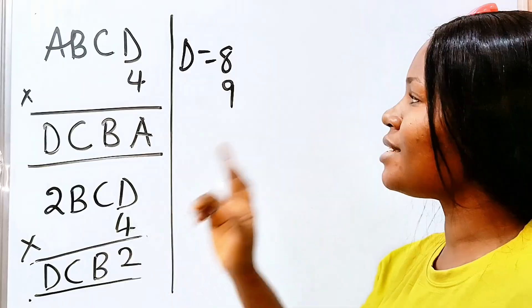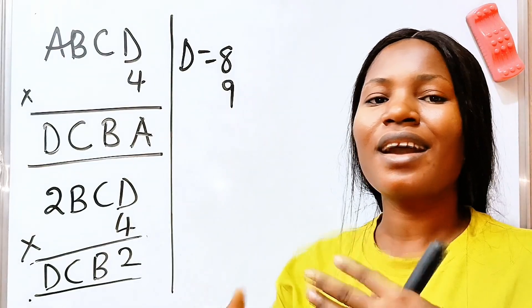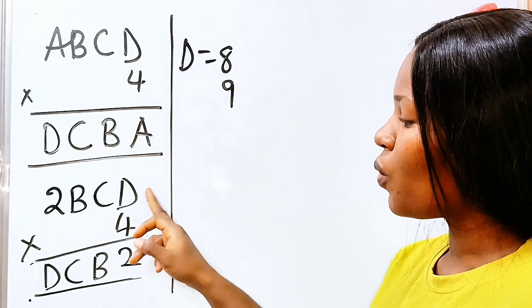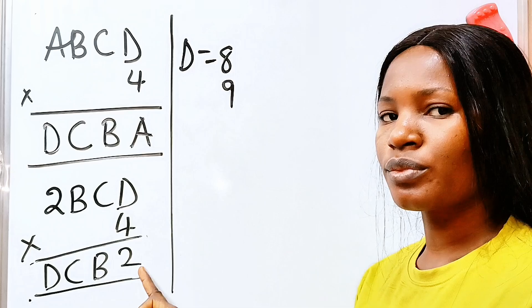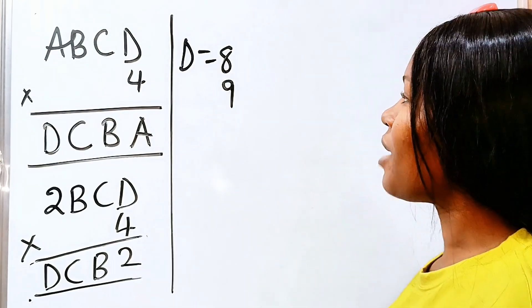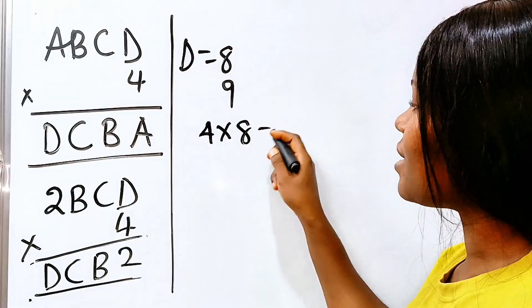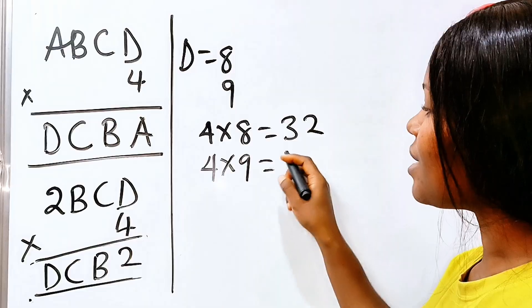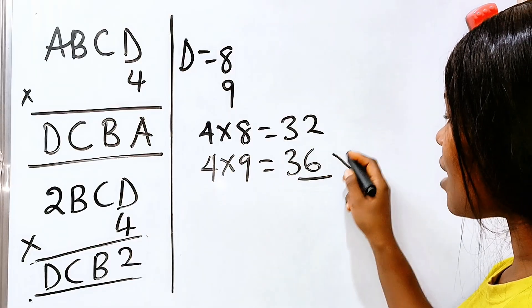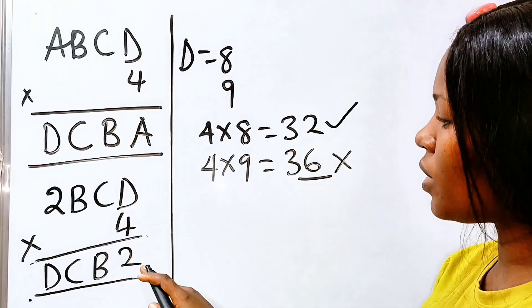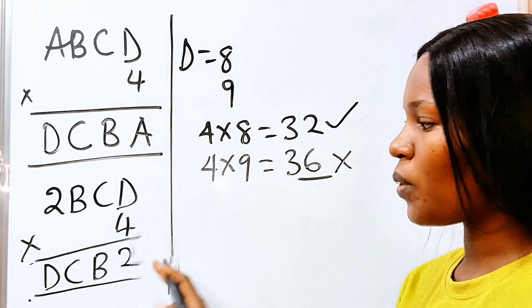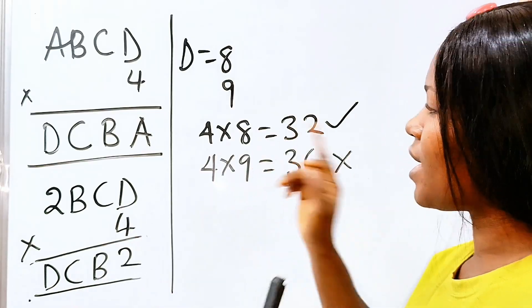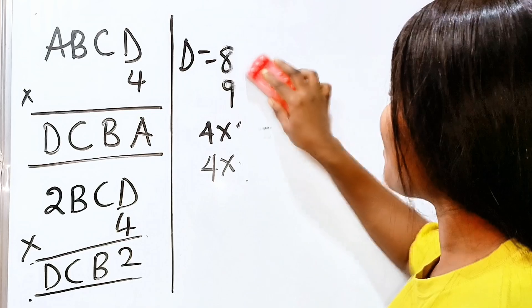So that means that our D is either 8 or 9. Now, how do we verify our answer? Remember that 4 times D will give us a number that ends with 2. Then we carry the carry over. So now let's check. 4 times 8 is 32. Can you see that? But 4 times 9 is 36. So 8 is out because it must end with 2 in order to qualify to be our D when we compare it from this side. So in conclusion, our D is 8.